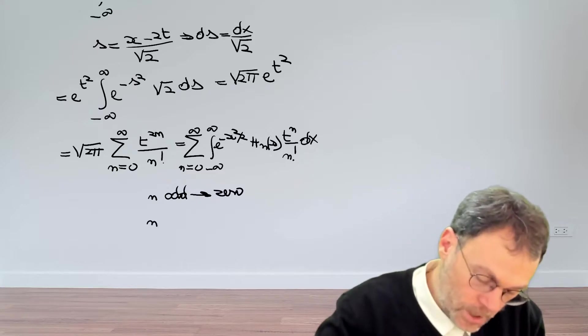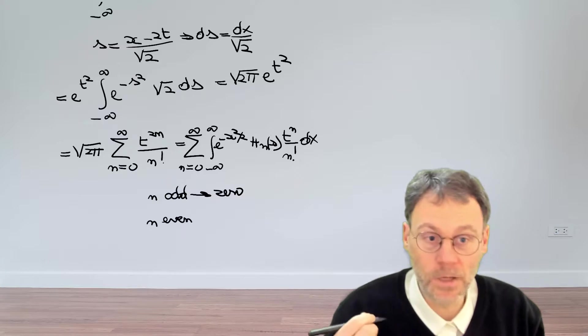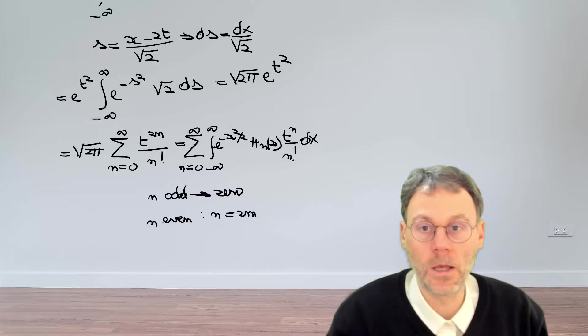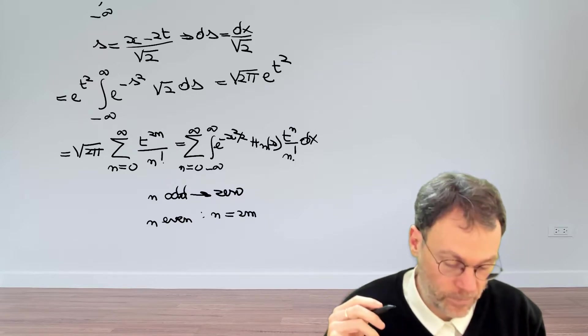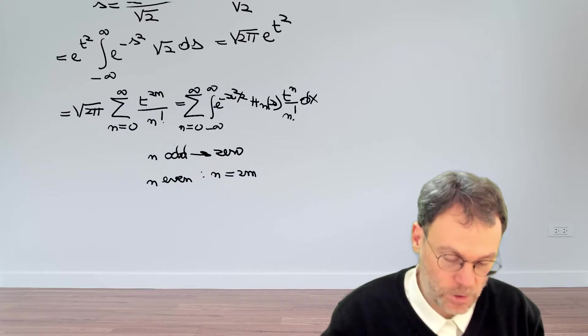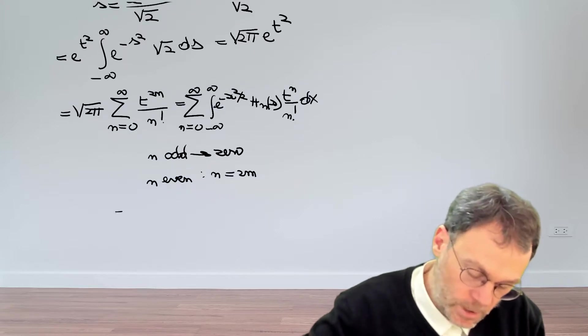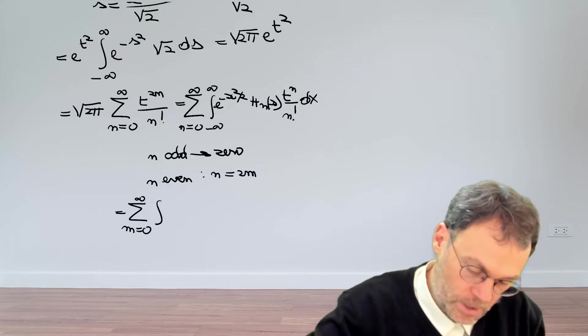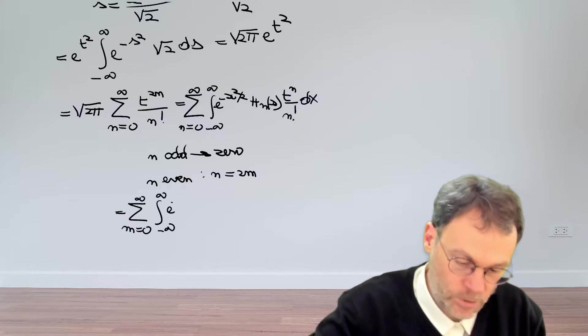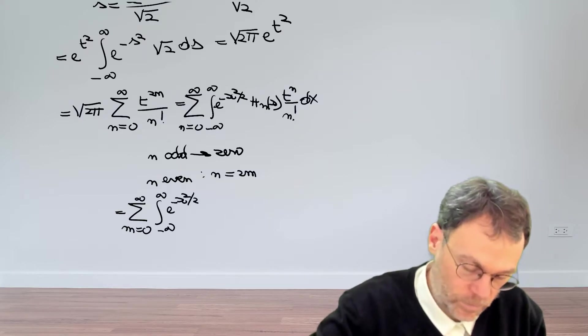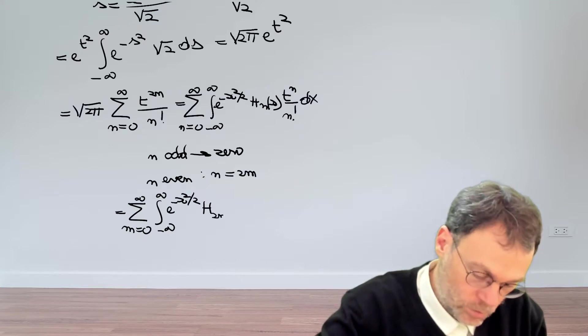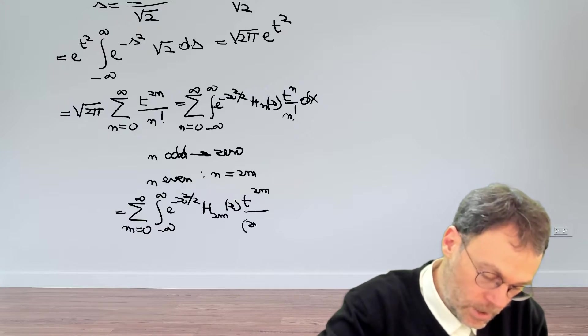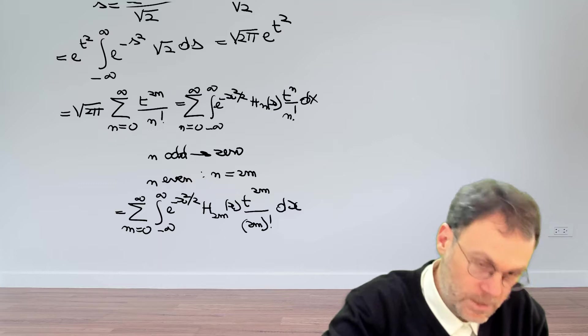So we only need to worry about the case where n is an even number. So we can actually write n as 2 times m in order to make it a bit more easy to identify like powers of t. So let's do that substitution. So we can then say that this is an integral of sums where m is going from 0 to infinity, minus infinity to plus infinity, exponential minus x squared over 2, h_n becomes 2m, and then we have t to the power of 2m divided by 2m factorial dx.